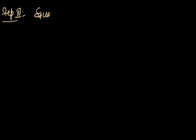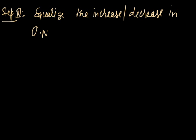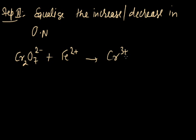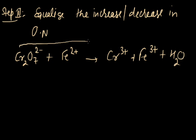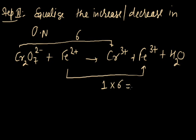Step 3: Equalize the increase and decrease in oxidation number. The dichromate ion has a decrease of 6, while iron has an increase of only 1. So we multiply Fe²⁺ by 6 in order to equalize the increase and decrease in oxidation number. We write 6 before Fe²⁺. Now the decrease and increase in oxidation number have been balanced.